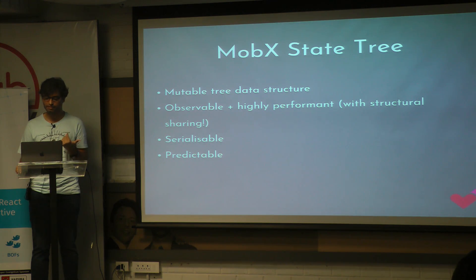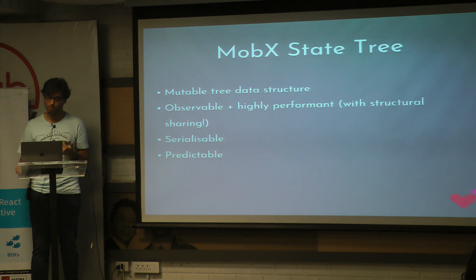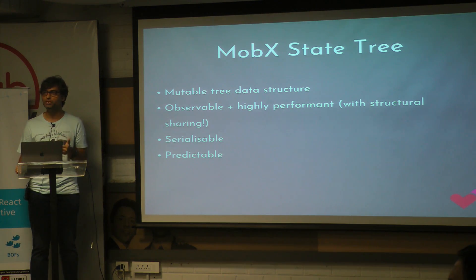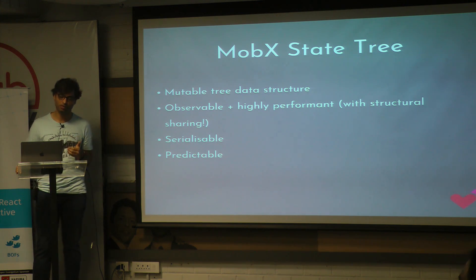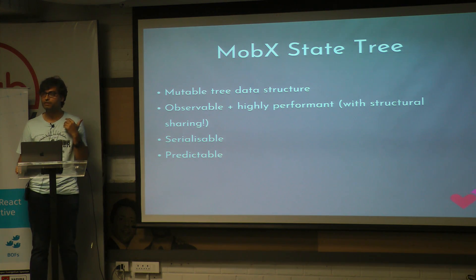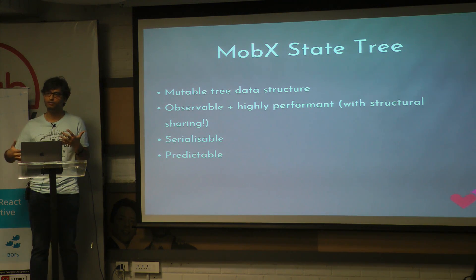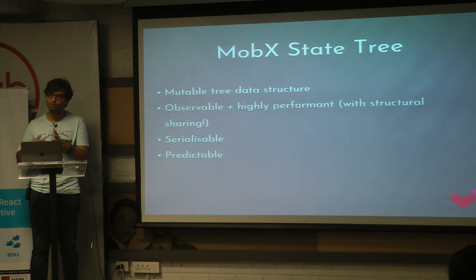MobX was good enough, but MobX State Tree brings together, I think, the best of both Redux and MobX. It again relies on immutable data structures, but this time the mutations are done in a very controlled manner. It also has observables — just like MobX, which is ultimately based on observables. You use observables to represent state, and the observables give you a callback to re-render your components.